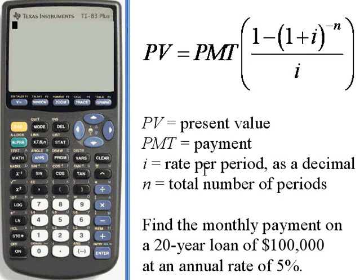Remember, i is the rate per period as a decimal. So the annual rate is 5%. Let's put that in as a decimal. That's .05. And then we want to divide that by the number of periods per year. Well, it was a monthly payment, so that's 12 periods per year, so we'll divide that by 12.